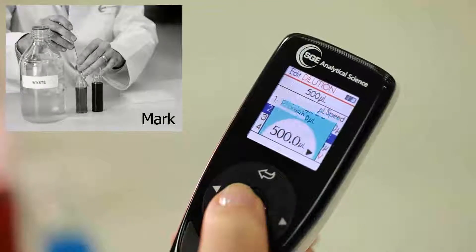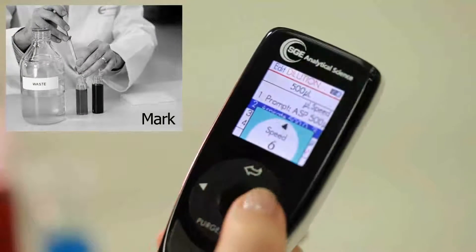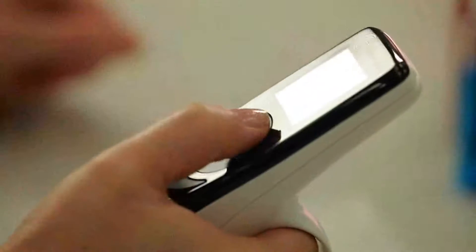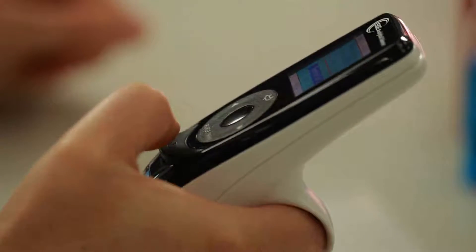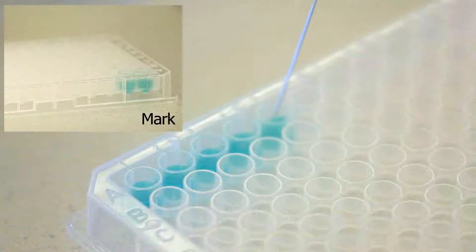First, Catherine selects the volume of liquid and speed for aspiration. Next, Catherine sets her method to dispense the liquid five times for each of five wells.